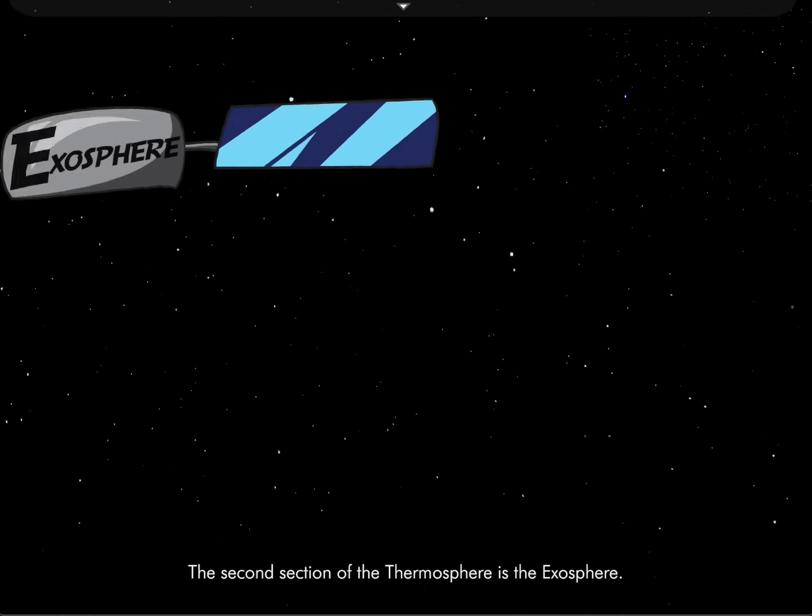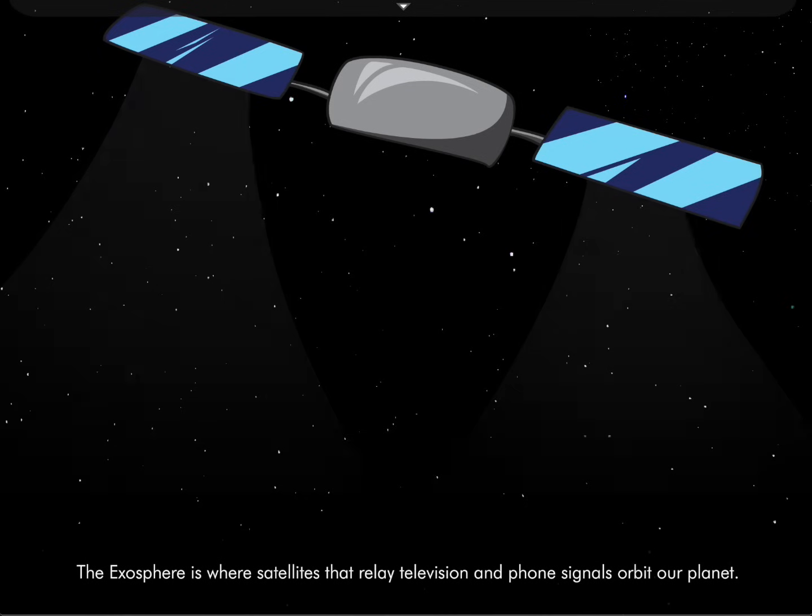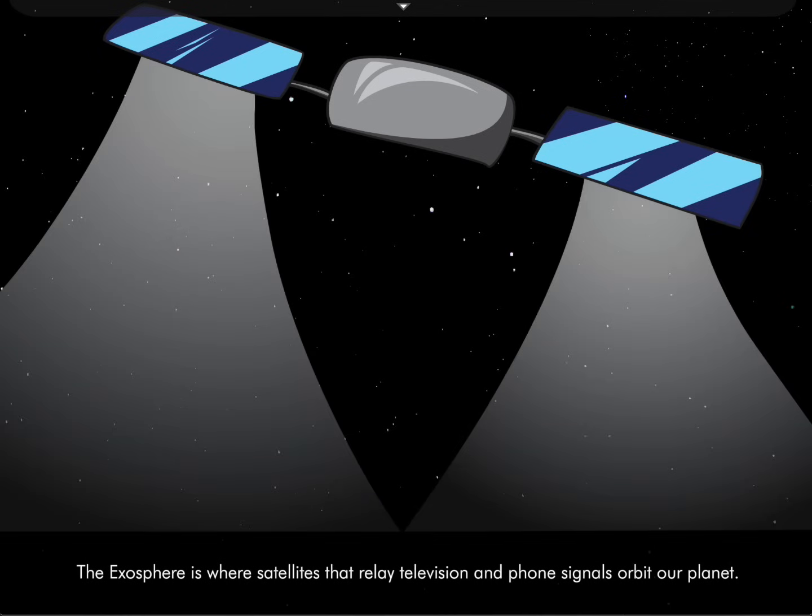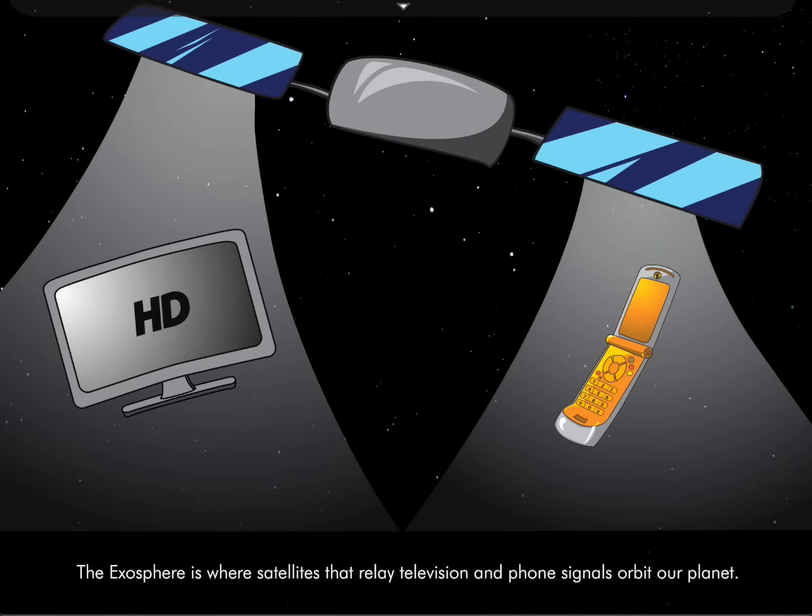The second section of the thermosphere is the exosphere. The exosphere is where satellites that relay television and phone signals orbit our planet.